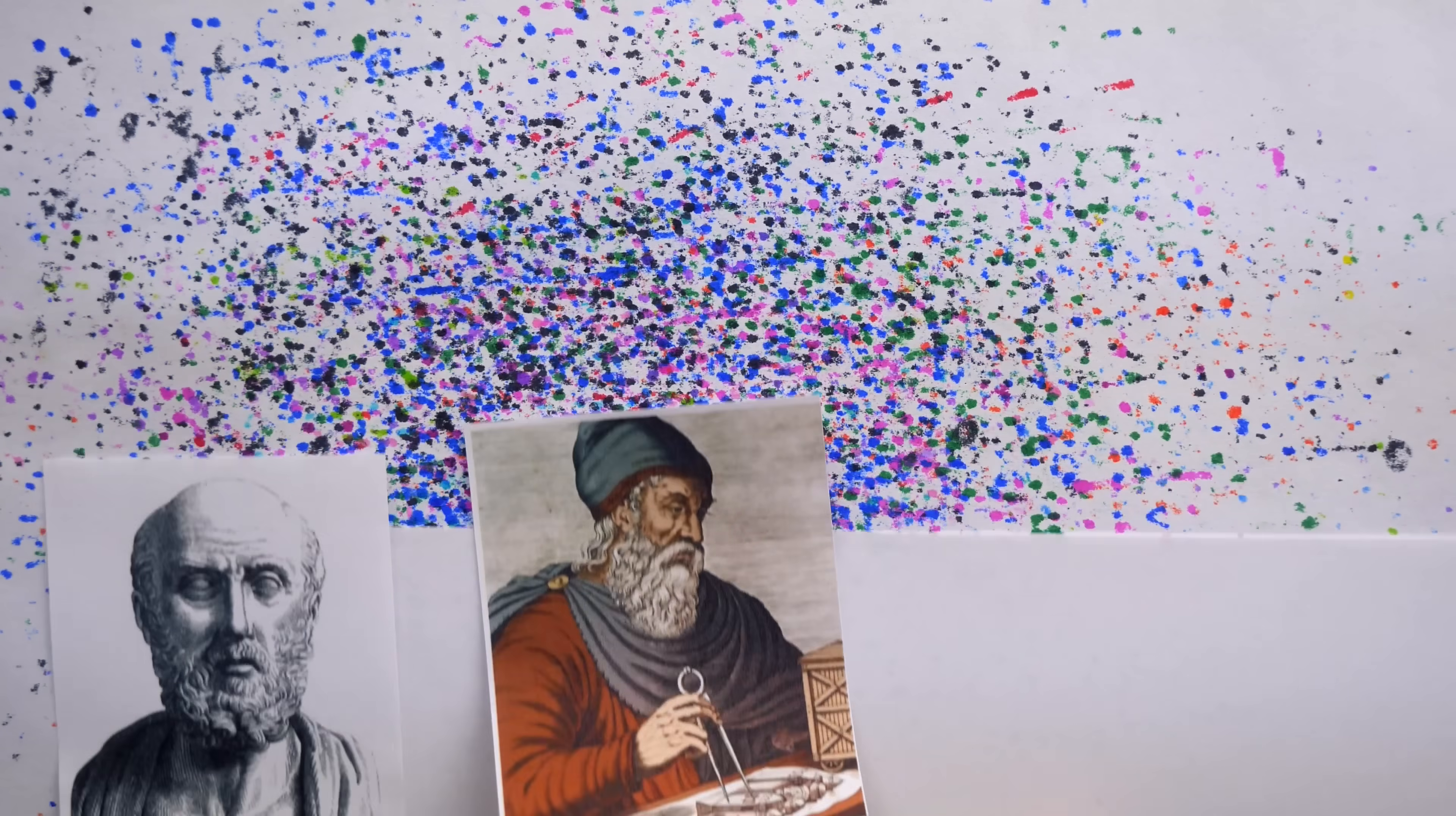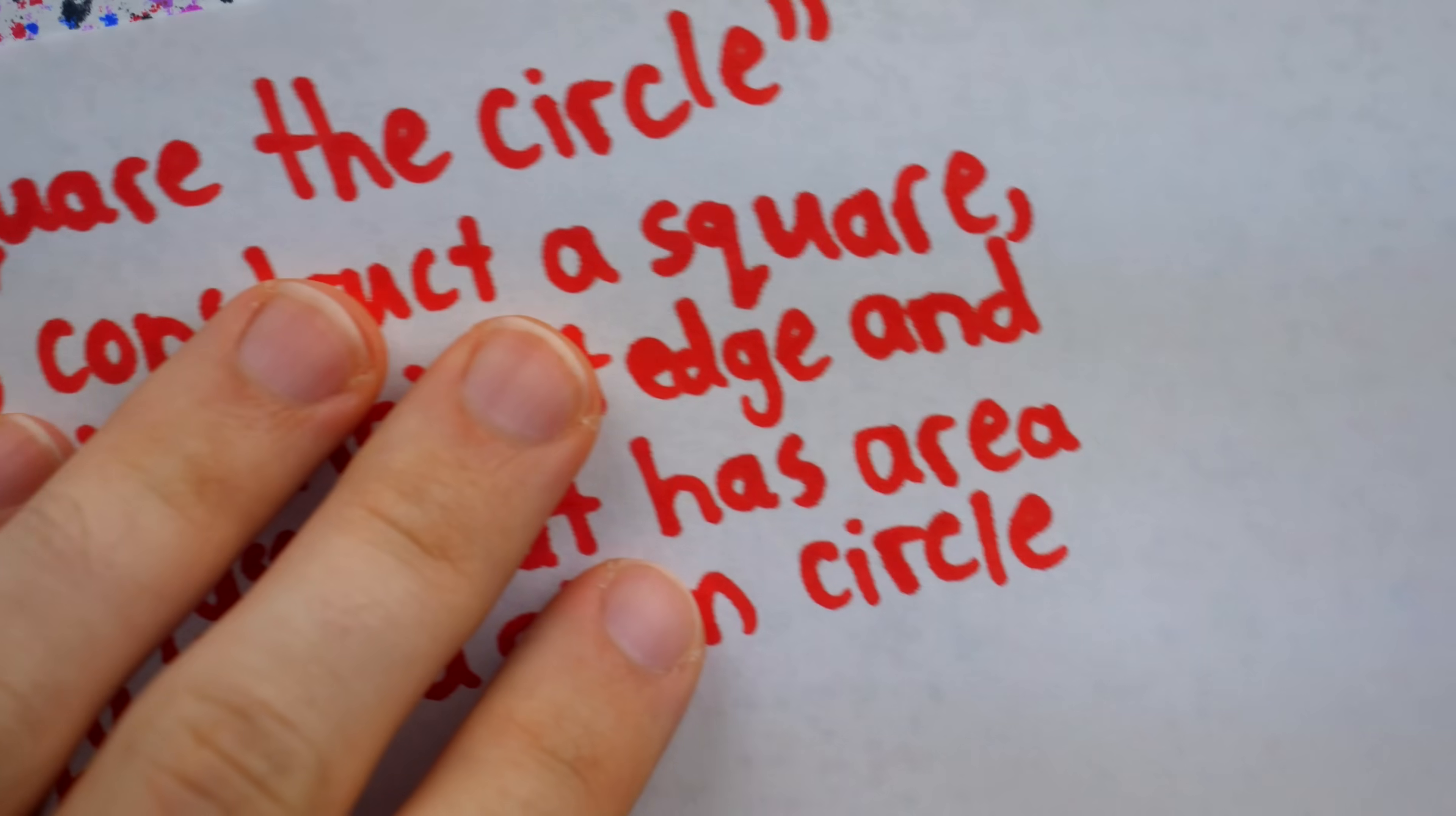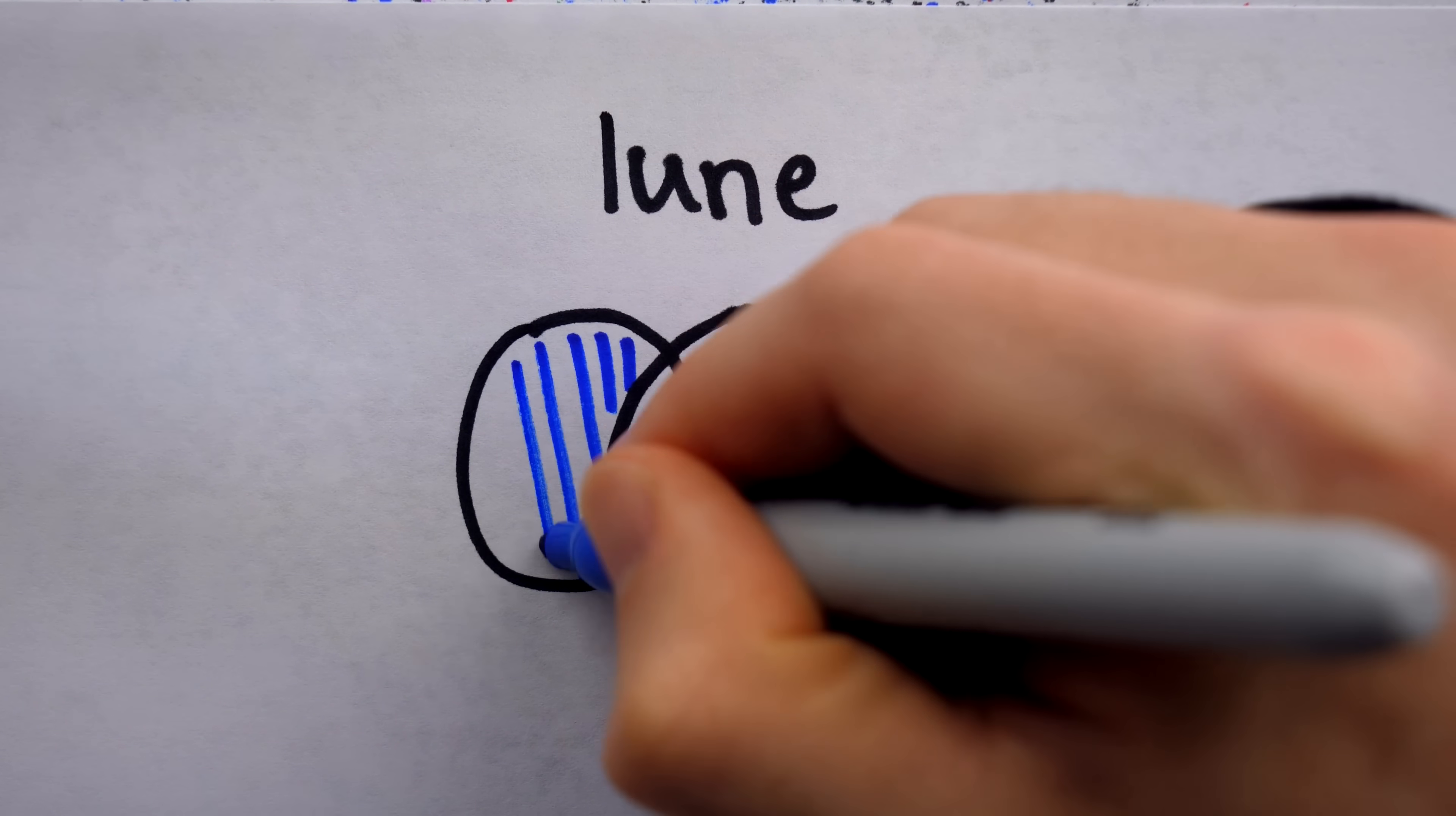Hippocrates' great discovery actually came about during his quest to square the circle. This phrase, common in descriptions of Greek mathematics, means to construct a square with straight edge and compass that has area equal to a given circle. And the curved shape that Hippocrates squared 200 years before the circle is called a lune. From the Latin word luna, which of course means moon. A lune is the concave convex region bounded by two circular arcs. Put simply, two circles intersect and two lunes are created.